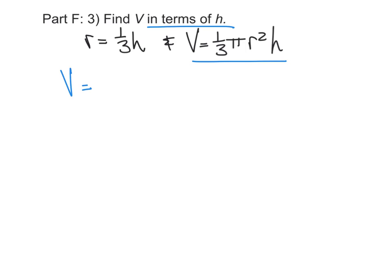So I'm going to rewrite V as 1/3 pi R squared H, except instead of using R, we know that R is 1/3 H, so I'm going to plug in 1/3 H in there. Now it's just a matter of simplifying.